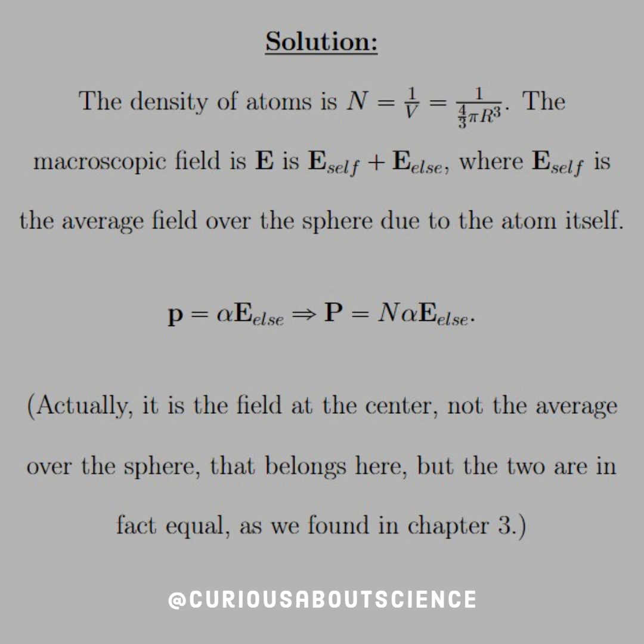Recall that the dipole was equal to αE_else. When we sum that over all the atoms, that's the polarization. So that's why I have to multiply by the density of atoms N, and then α times E_else. But let's note that actually it is the field at the center, not the average over the sphere that belongs here. But if you recall, when we were working with Laplace's equations and all the math theory, they are in fact equal. So now we can move forward.